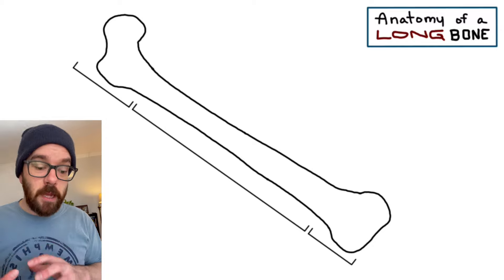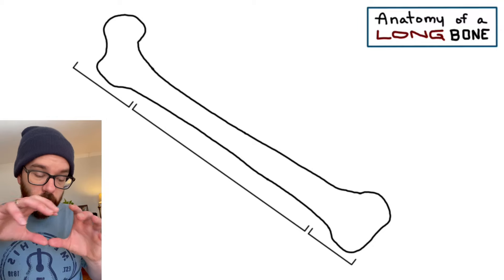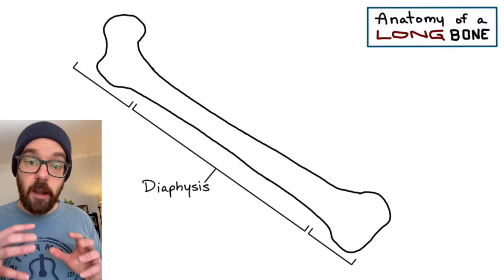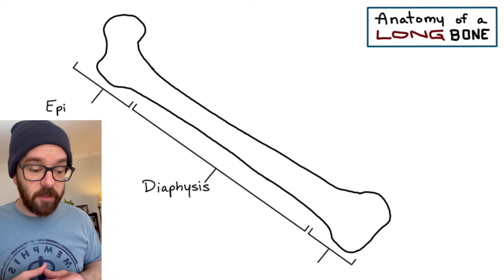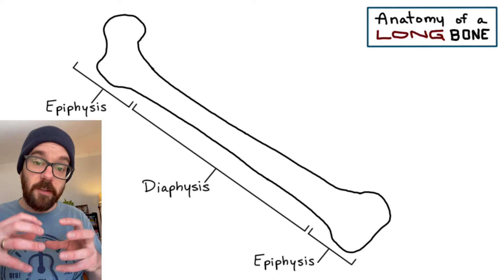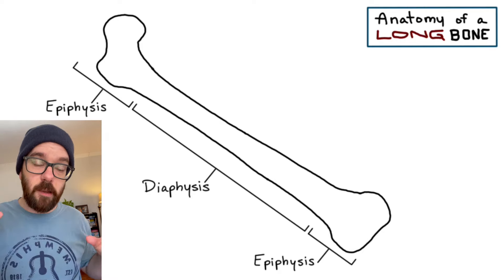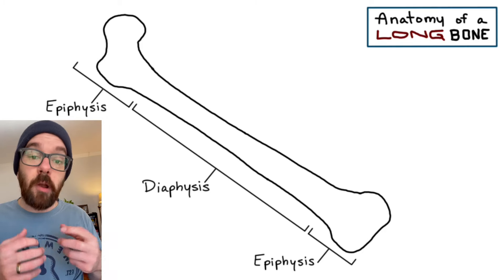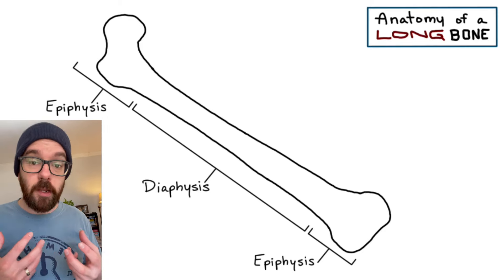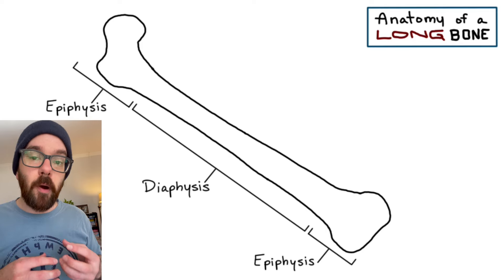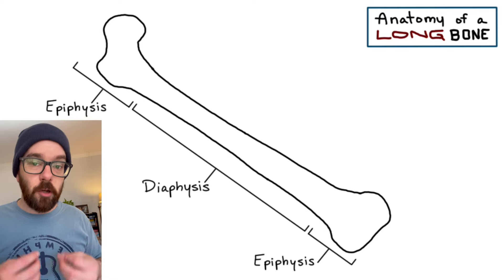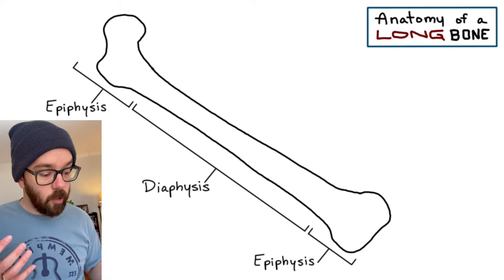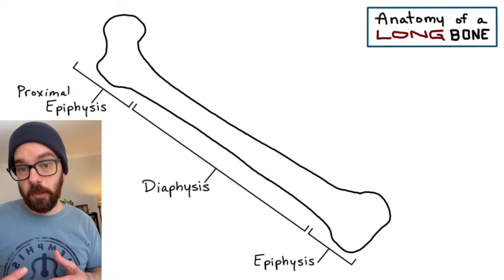There are three main regions of the bone. The middle or main shaft of the bone is called the diaphysis. On either side of the diaphysis, we have something called an epiphysis. The epiphyses are on either end, and the diaphysis is the long shaft of the bone. We have a name for each epiphysis depending on which side it's on. The part of the bone closest to the shoulders, hips, or point of attachment is called the proximal epiphysis.